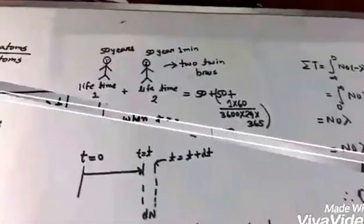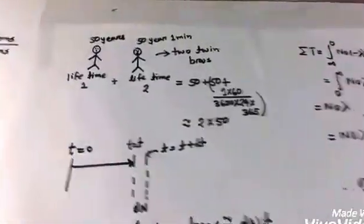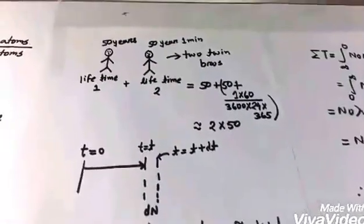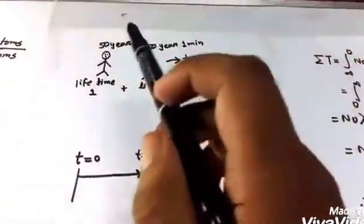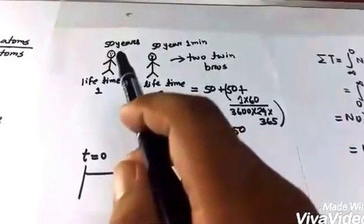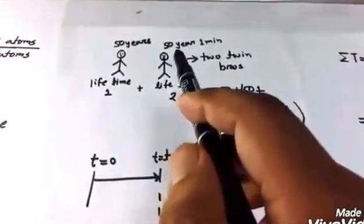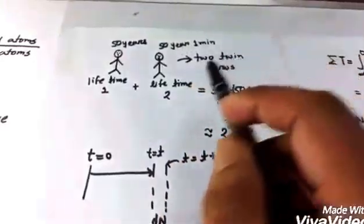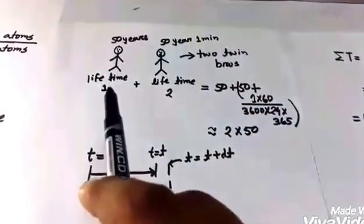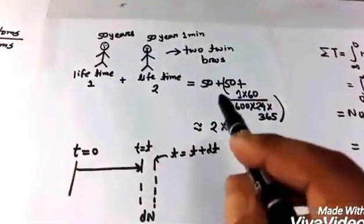Suppose there are two twin brothers, one of them died at the age of 50 years, another of them died at the age of 50 years one minute. Their total lifetime will be 50 years plus 50 years one minute, but one minute is very small compared to 50 years, so their total lifetime will be 2 multiplied by 50.